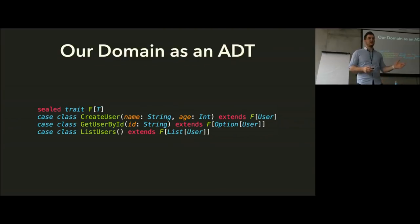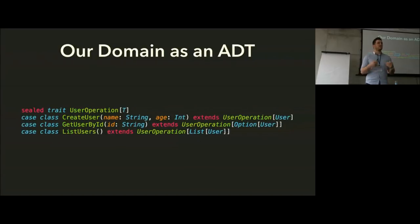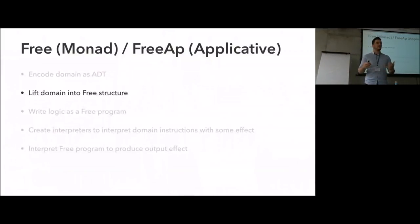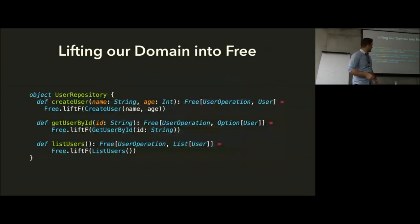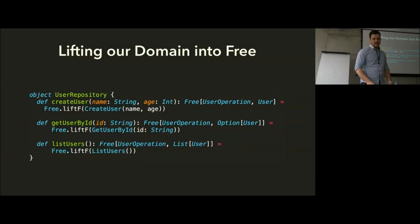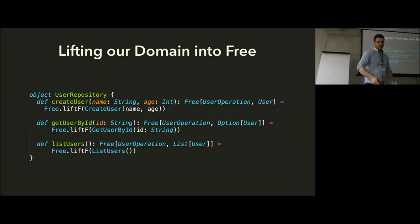This F is very often conventionally named after the domain with some kind of 'operation' suffix — for now we'll call it UserOperation. This just represents the effect we're going to use. The next thing is to lift our domain into one of these free structures, whether the free monad or the free applicative. We basically just use dot-lift, and that lifts it into the free monad — I'm representing the free monad as a blue box, and the free applicative as a red box. The code is pretty straightforward; there's a bit of boilerplate, but we just say we have a Free thing with some UserOperations returning a User, and use Free.liftF of the actual case class data.